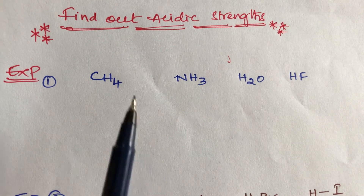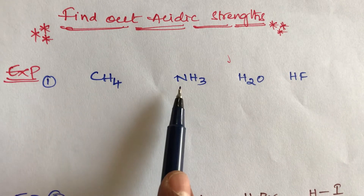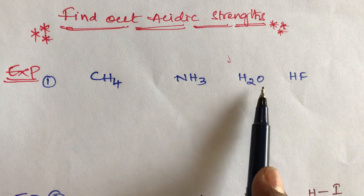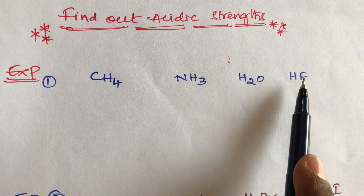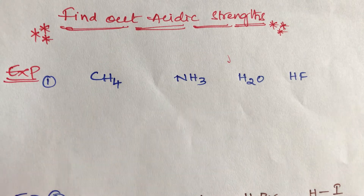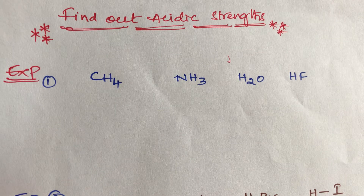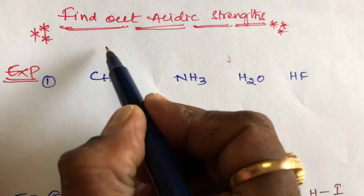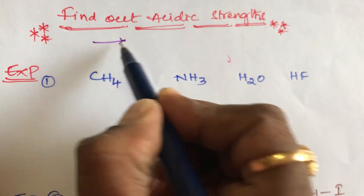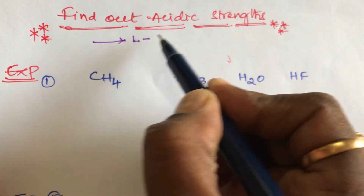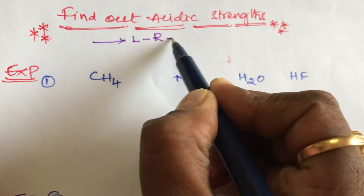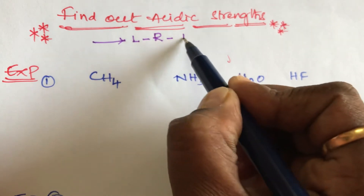Carbon belongs to group 4, nitrogen to group 5, oxygen to group 6, and fluorine to group 7. According to the periodic table, acidic strength in a period from left to right increases.